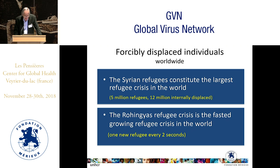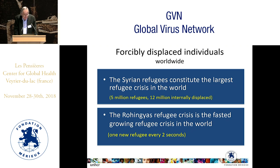The Syrian refugees now constitute the largest refugee crisis in the world, with 12 million internally displaced Syrians and 5 million who have crossed the border to neighboring countries. The Rohingya refugees in Bangladesh represent the fastest-growing refugee crisis in the world. Although the speed has reduced a little, we are still at one refugee every two seconds — meaning by the end of a 25-minute talk, 750 Burmese will have landed on the shores of Bangladesh.